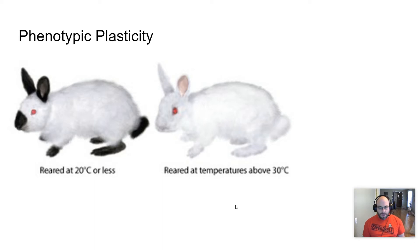You can see here these are Himalayan rabbits. If they're reared at 20 degrees or less, they have the black tips. And if they're above 30, then apparently they have just all white. I'm not a rabbit raiser, but I'm sure this is true.